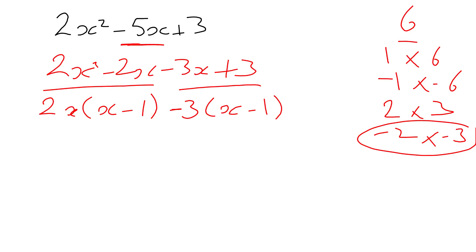The next step, I can factorize these two terms because each term has got x minus 1 in, so I want to take x minus 1 out. And I'm left with 2x from the first term, and I'm left with minus 3 from the second term.